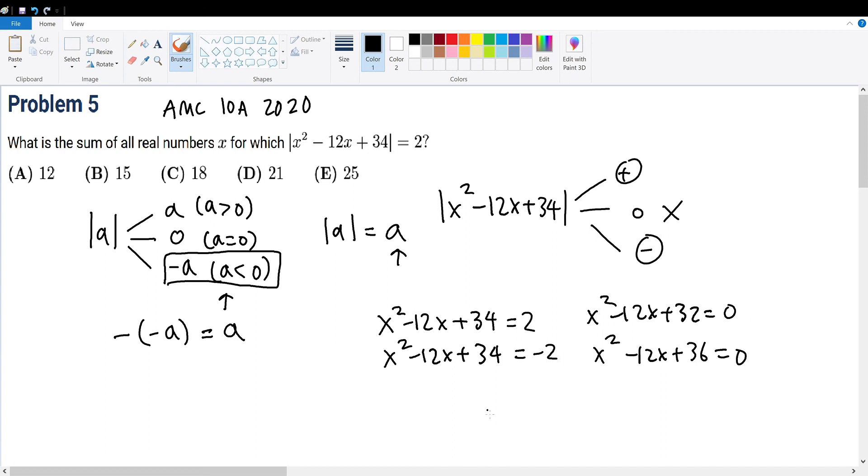We can factor the first expression to be x minus 4 times x minus 8 equals 0. And we can factor the second one as a perfect square, x minus 6 squared equals 0. So from the second expression, the only solution for x is 6. And for the first expression, the only solutions for x are 4 and 8.